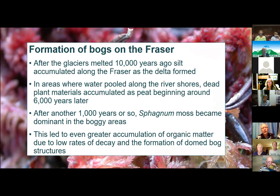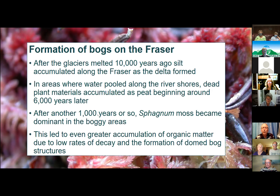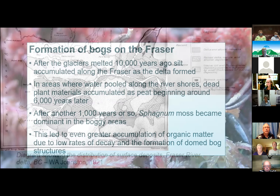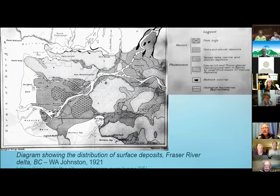These bogs formed after the glaciers left. The glaciers melted and produced silt accumulating along the Fraser, forming the delta. Water pooled along the shores and plant material accumulated. Peat is accumulated dying or dead plant material — that's around 6,000 years after the ice. Then, after another 1,000 years, something appeared that is probably one of my favorite plants in the world: sphagnum moss, which became dominant in the boggy areas.